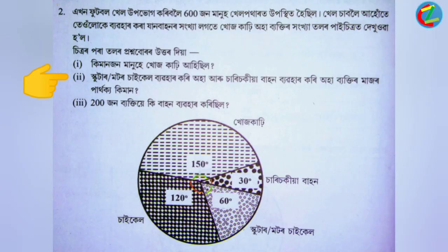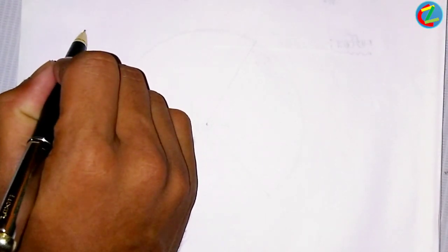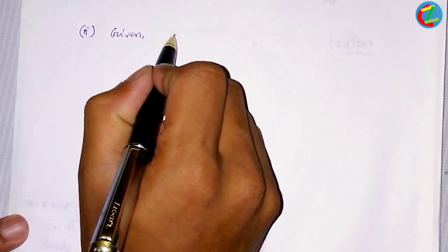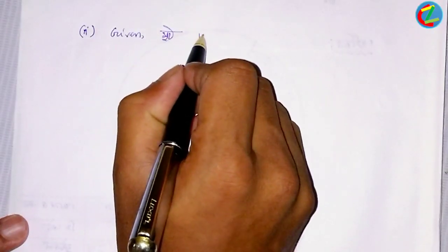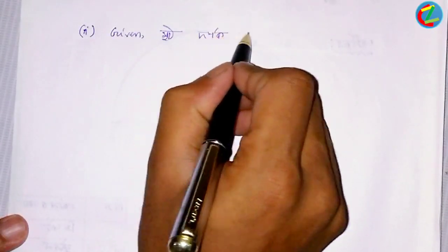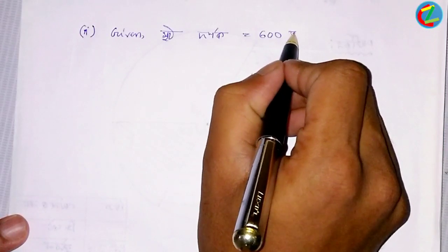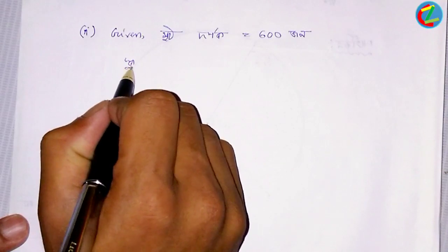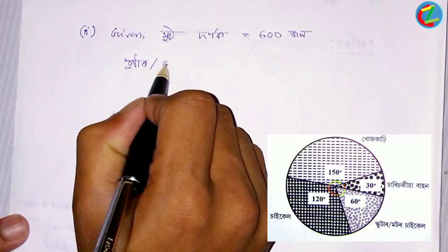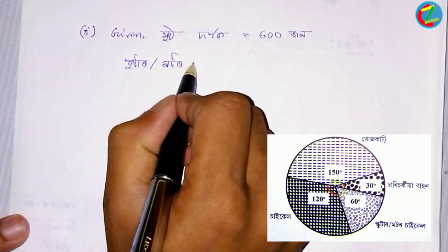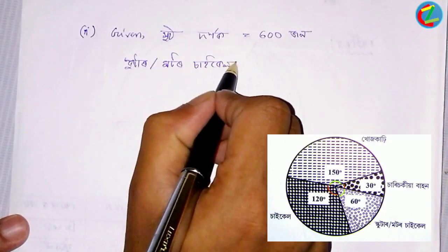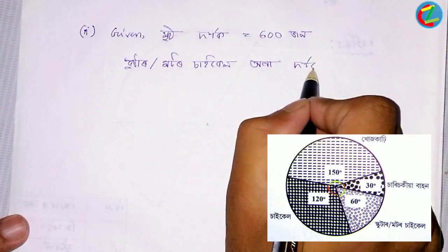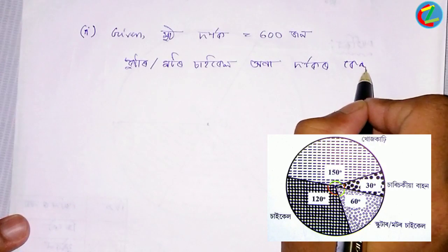We have to give you the number two. We have to give you the number one, number two. Two little things. There is a 3-1, so we can find the 3-1, we can find the scooter, motor, cycle, and the 2-1. The 3-1 is the 3-1.